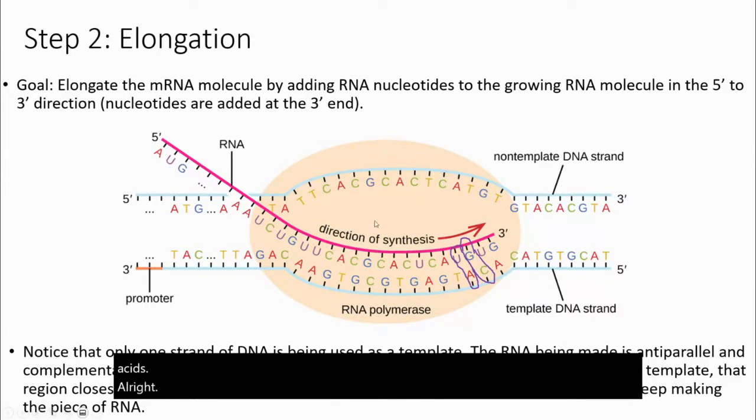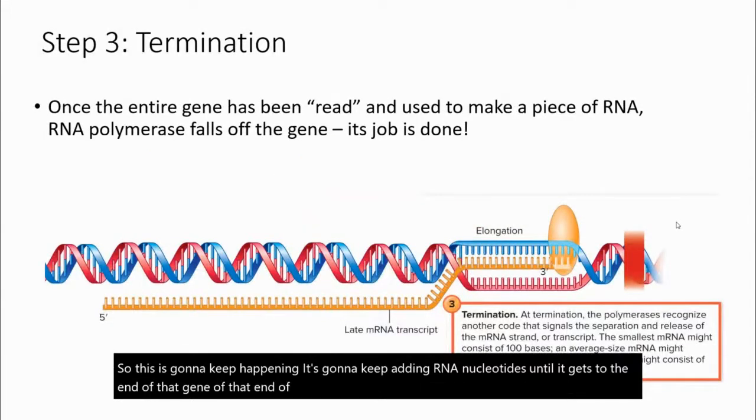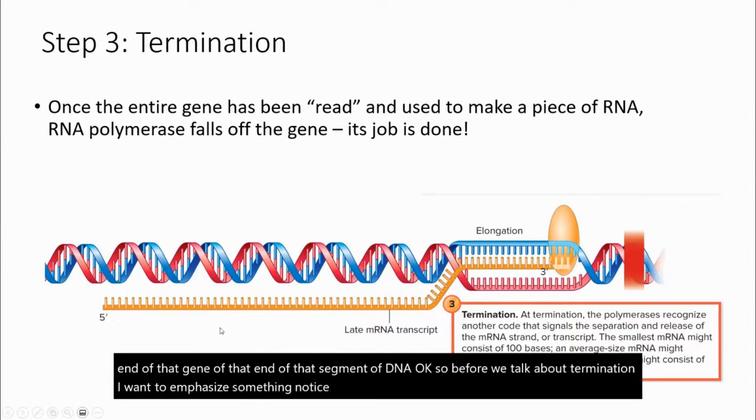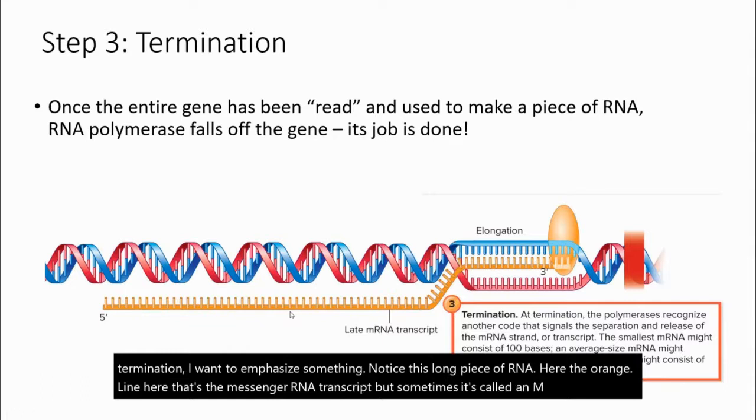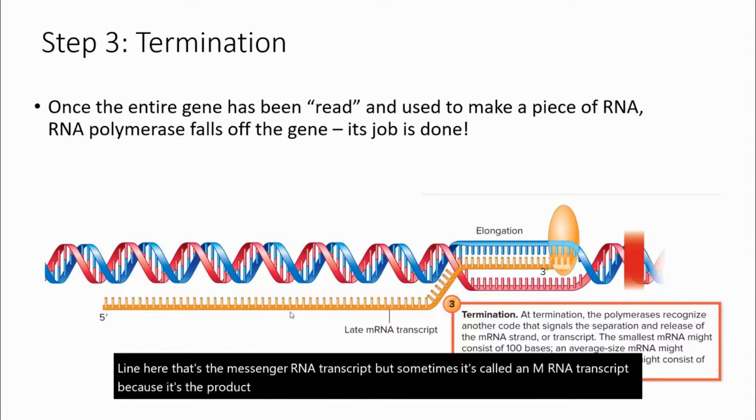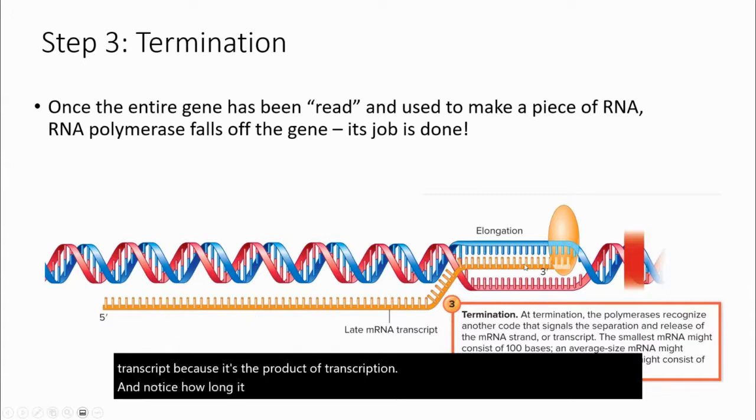This is going to keep happening. It's going to keep adding RNA nucleotides until it gets to the end of that gene, of that segment of DNA. Before we talk about termination, I want to emphasize something. Notice this long piece of RNA here, the orange line. That's the messenger RNA transcript. Sometimes it's called an mRNA transcript because it's the product of transcription. And notice how long it is. So you can clearly see here where the DNA is opened up and RNA polymerase is making RNA, using that template strand of DNA.